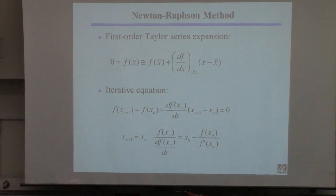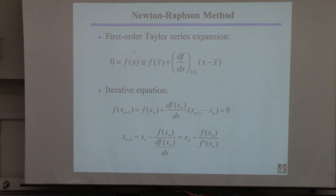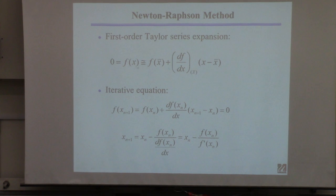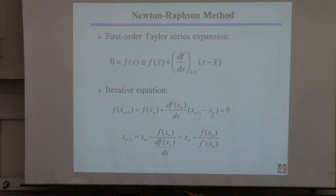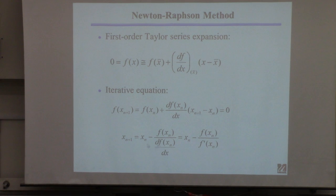Once we have this approximate equation, we turn it into an iterative equation. We substitute xₙ₊₁ for x on the left-hand side, and xₙ for x̄ everywhere. This gives us an equation we can solve for xₙ₊₁. Doing so yields the Newton-Raphson equation: xₙ₊₁ = xₙ − f(xₙ) / f′(xₙ).